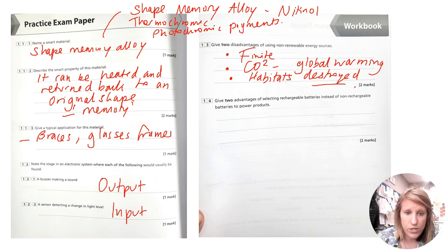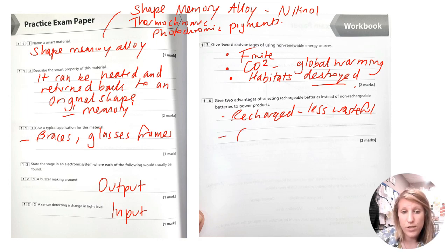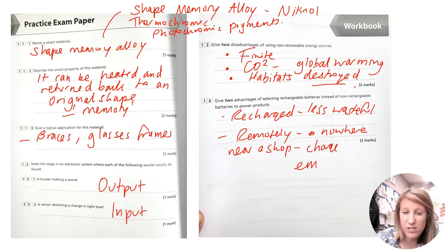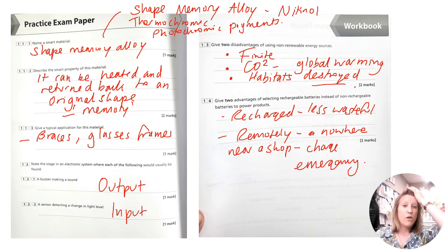Last question we're going to go through, give two advantages of selecting rechargeable batteries instead of non-rechargeable batteries to power products. They can be recharged. So it's less wasteful. It can be recharged, less wasteful. They're good in like, if you were using them remotely, you could charge them up remotely, if you were like nowhere near a shop or something, you could still charge them. So they could be good in emergency, I guess. I can't think of anything else for that. It's quite a strange question, that one.